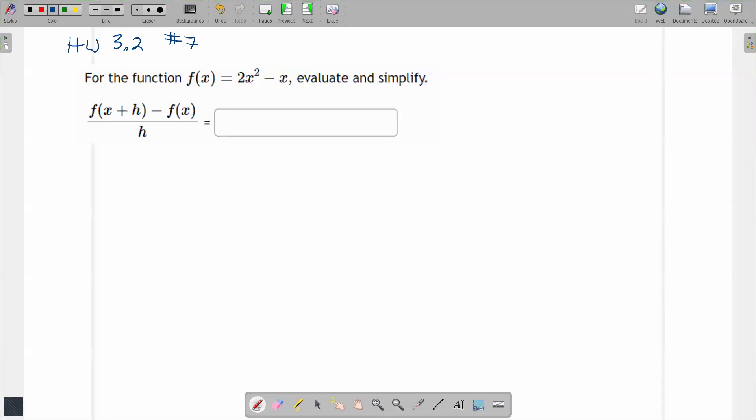My recommendation on this one is we do it in three steps. The first step is going to be to figure out what f of x plus h is. The second step is to figure out what the subtraction is. The third step is to divide by h, and then we'll check it. All right, so step one.